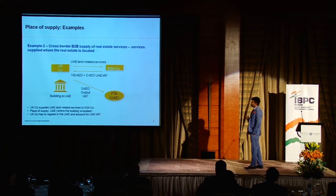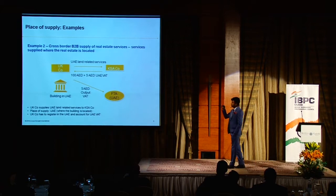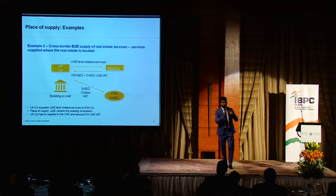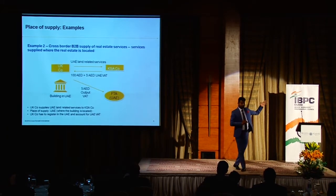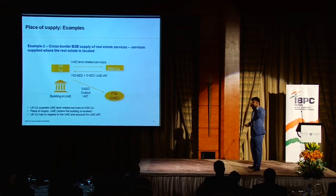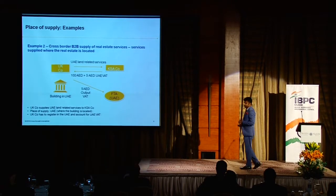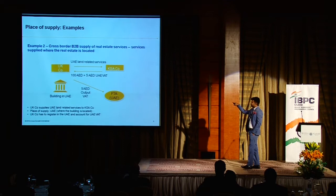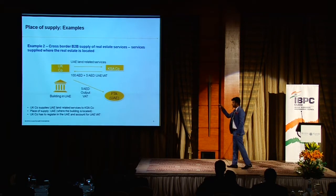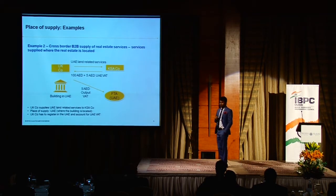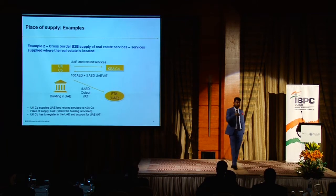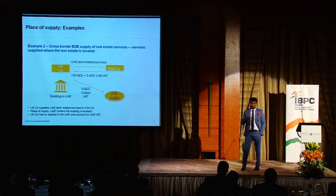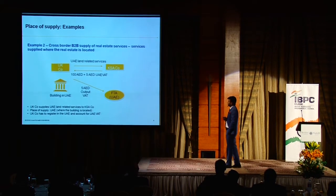Another cross-border B2B example: a real estate service provided by a UK company to a KSA company for a property within UAE. In that case, 5% VAT will apply and the UK company must have a place of establishment registered within UAE because the place of supply is UAE — the property is situated here.